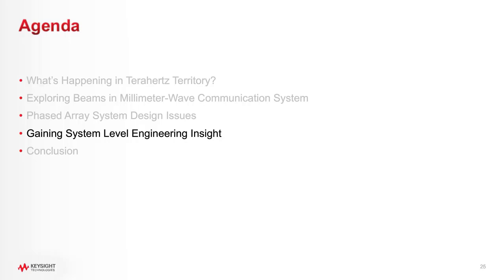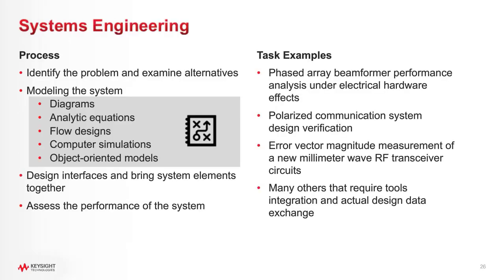Turning to a higher-level system engineering topic, let me talk about the process of system engineering briefly. Once the architect has designed the early concept of the system and identified the problems, they always look for alternatives by modeling the system using different tools, which are from analytic equations, flowchart, to complex computer simulation. These models can be a low-level component, subsystem, and even entire system combined with various interfaces. Finally, the system performance is evaluated for updating system architecture. There are so many system engineering tasks that require different tools integration and actual design data exchange, as we reviewed four different phased array electrical hardware effect examples in the previous section.